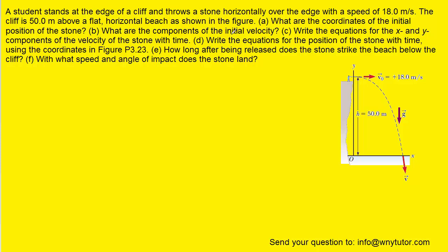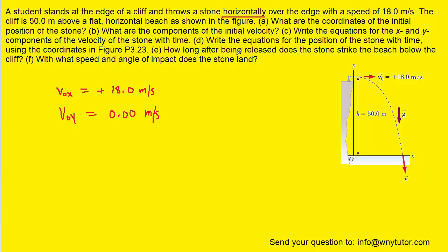For part B, the components of the initial velocity — we have to note that the stone is thrown horizontally as stated in the question. That means the motion of the stone is exclusively in the X direction, so the initial velocity in the X direction will be positive 18 meters per second. In the Y direction, however, the initial velocity will be 0, because the stone is not moving in the Y direction initially. This is the correct answer to part B.